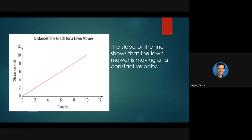This diagonal line shows the slope, and the slope of the line shows that the lawnmower was moving at a constant speed, because every two seconds it's moving two meters. Another two seconds passes — another two meters. Another two seconds — another two meters. So there's this constant relationship that doesn't change.